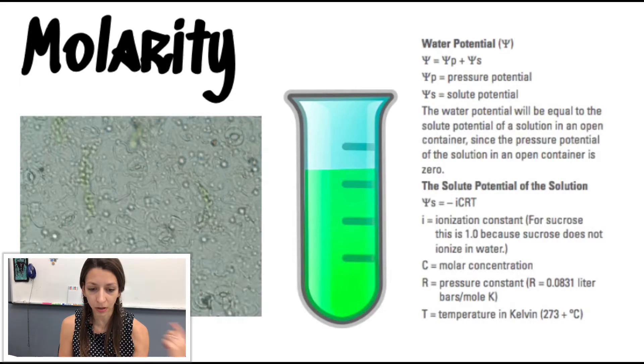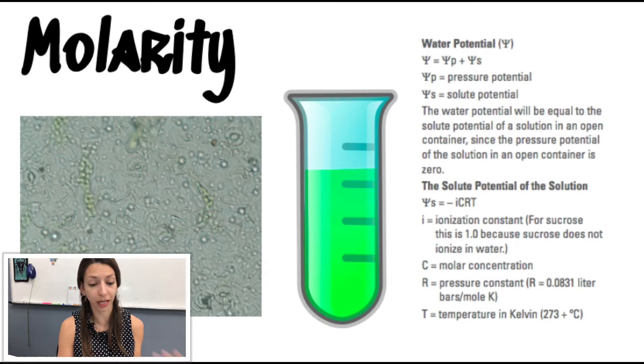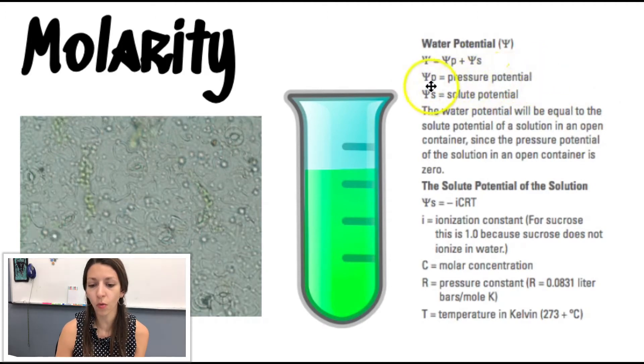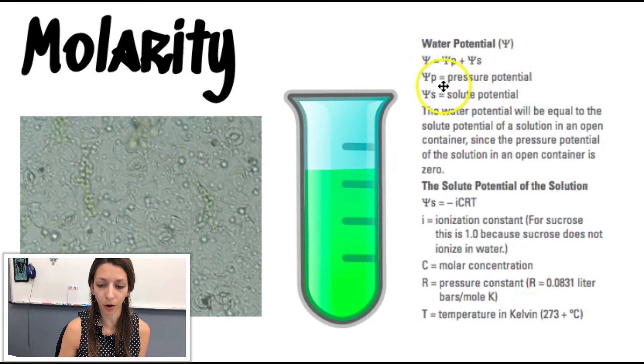All right. So going back to molarity and water potential, water potential is going to predict which way the water will diffuse through plant tissues. Again, we use that Greek letter psi to represent water potential. Generally, when we're calculating things, a lot of times in an open container, this pressure potential will be zero. So we won't even need to worry about this psi P part right here.